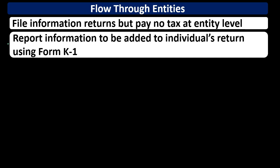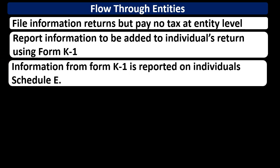Information is reported to be added to the individual's return using Form K-1. The K-1 is like a W-2 for this type of transaction — it reports how much you earned from the entity and what you need to report on your Form 1040. The information from the K-1 is reported on the 1040 using Schedule E, which then flows through to be included in taxable income.